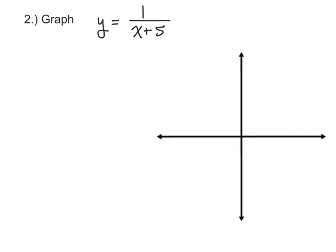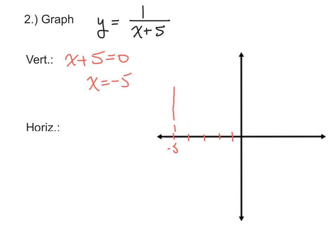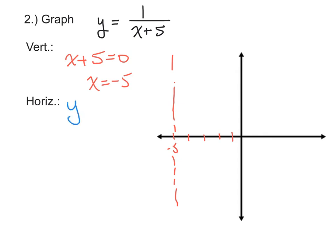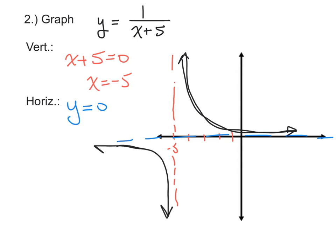Let's try another one: y equals 1 over x plus 5. First, find the vertical asymptote — that's where the denominator equals 0, so x equals negative 5. Go to negative 5 on the graph and draw a vertical dotted line. Next, find the horizontal asymptote — since there's no constant added outside the fraction, the horizontal asymptote is at y equals 0, which is just the x-axis. Since the numerator is positive, there's no reflection, so the graph stays in the upper right and lower left quadrants, approaching each asymptote.